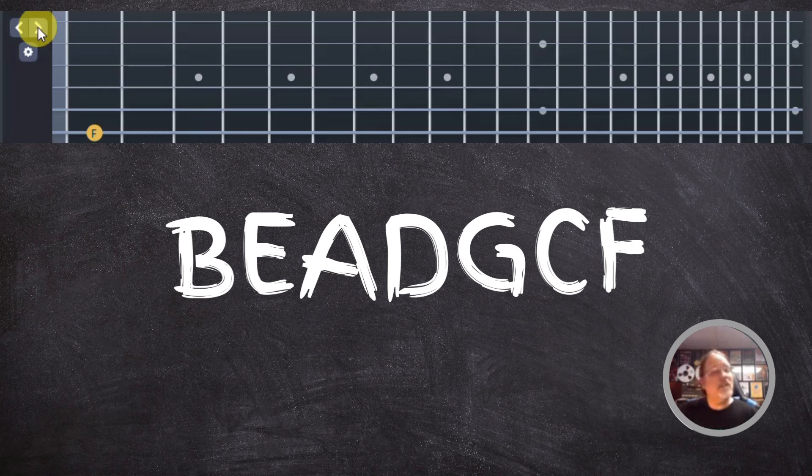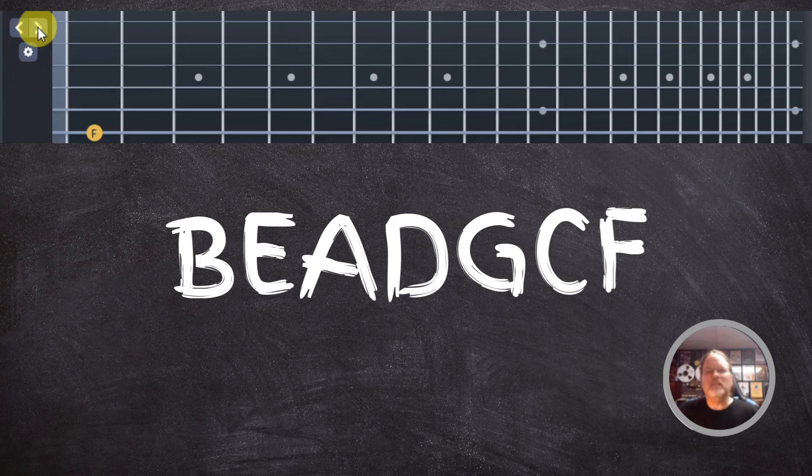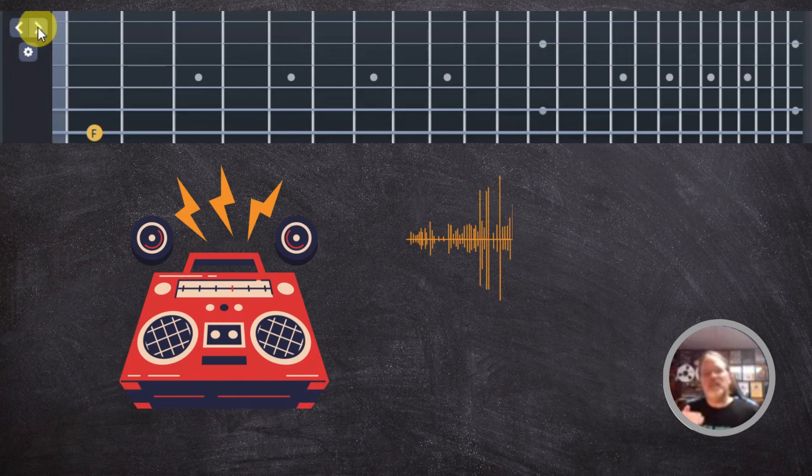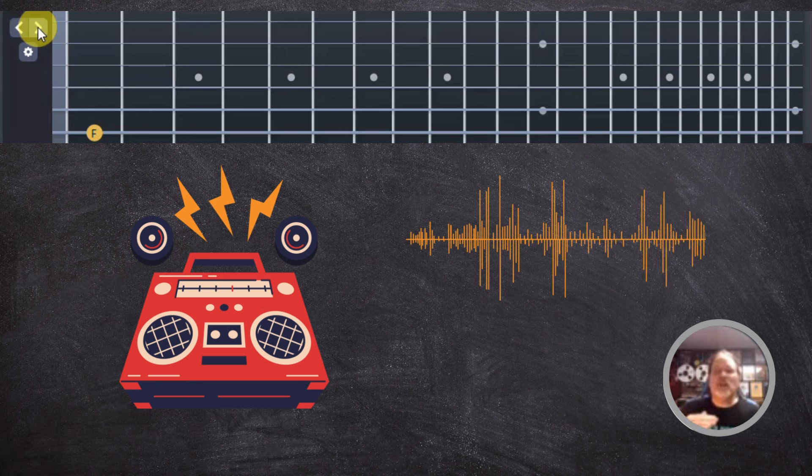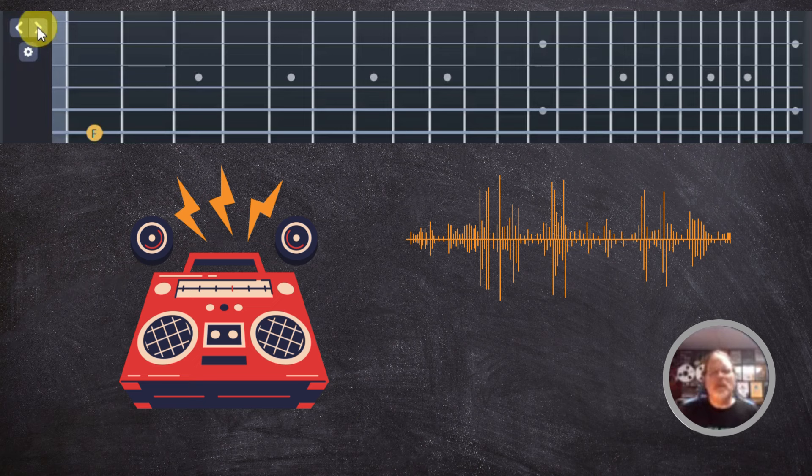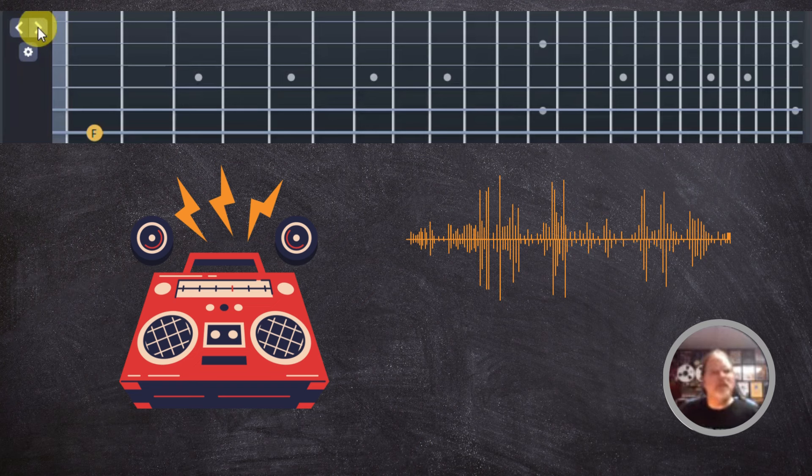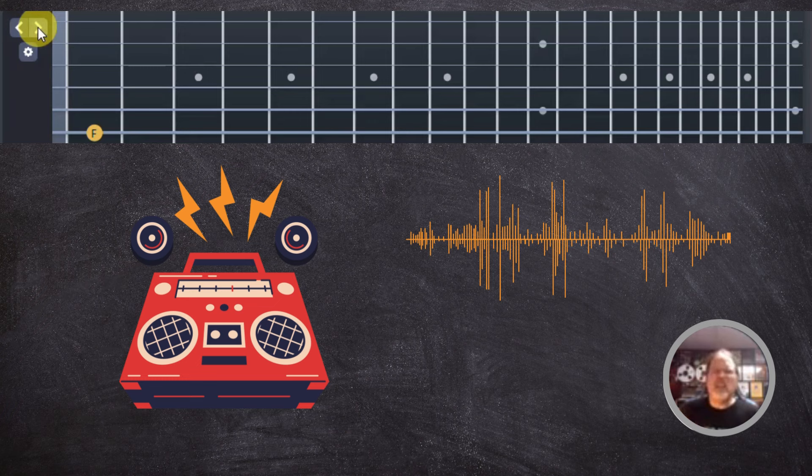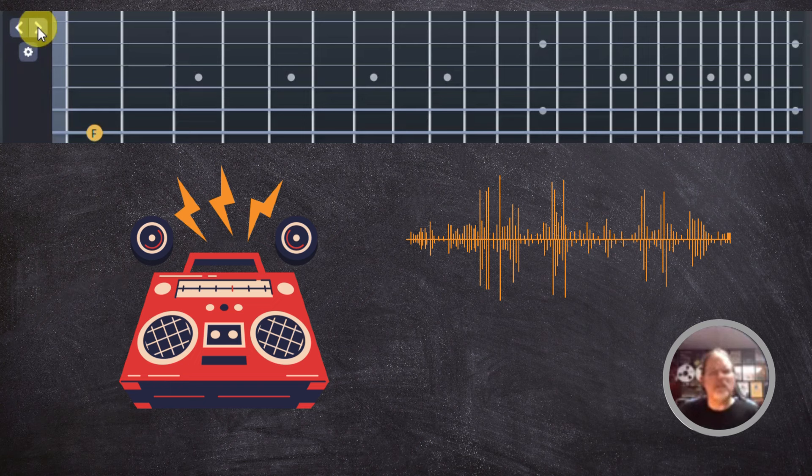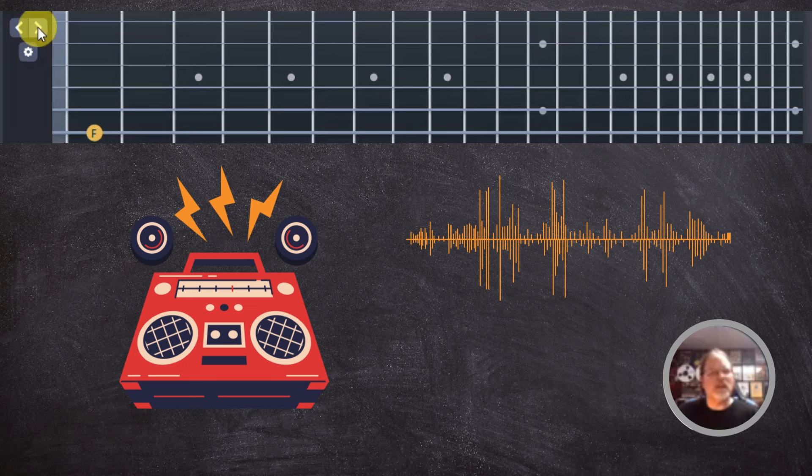Throw on that backing track and try to play along with it. This is where you're going to start slow and build up. You want to get this to a pretty good tempo. Basically, if you can go B E A D G C F around that tempo, that's pretty good. But yeah, that'll be more fun too when you put the track on, and then you can just play it over and over and over again.